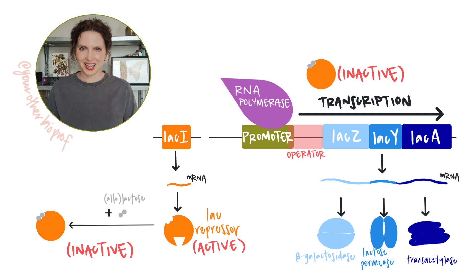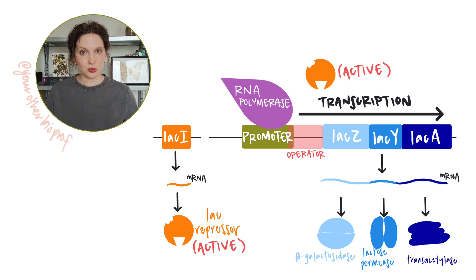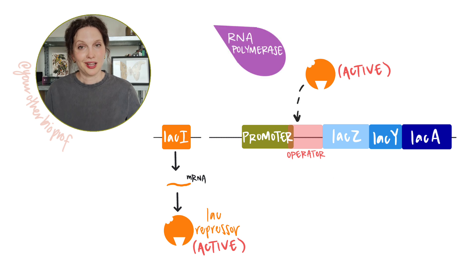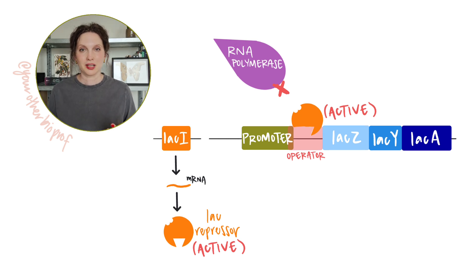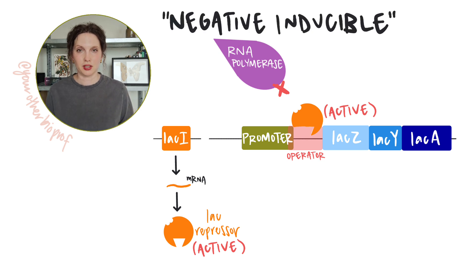We're breaking it down and eventually we're going to run out of lactose. So what happens now? Less lactose also means less allolactose, less inducer to bind up repressor. Now we're going to have active repressor roaming around. That's going to bind to the operator and turn off expression of those structural genes. Because why keep making enzymes for lactose metabolism when there's no more lactose around? This type of regulation is called negative inducible gene regulation.